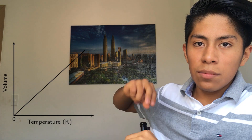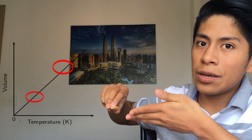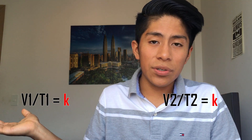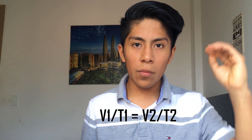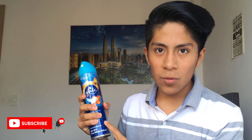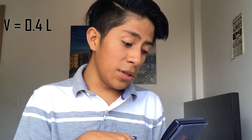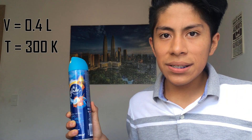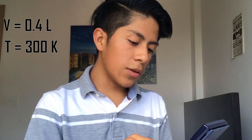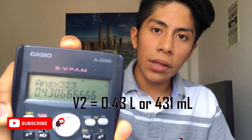Remember that this constant is the same at two points of the graph. So if we pick two points and equate both equations, we get another formula: V₁/T₁ = V₂/T₂. And here comes a warning. The volume is 0.4 liters at a temperature of 27°C, which is approximately 300 Kelvin. But if we raise the temperature to 50°C, that would be 323 Kelvin — what would be the new volume? If we do the math and replace the values in the formula, we get that the final volume is 0.43 liters.